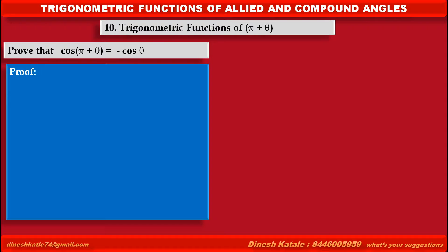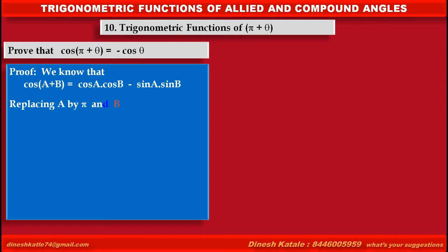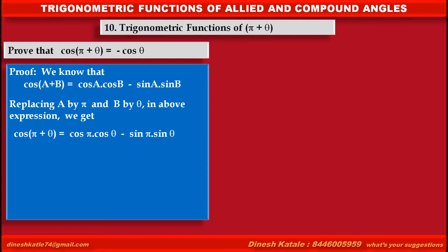See proof. We know that cos(a + b) is equal to cos a into cos b minus sin a into sin b. Replacing a by π and b by θ in the above expression, we get cos(π + θ) is equal to cos π into cos θ minus sin π into sin θ.